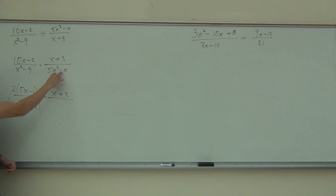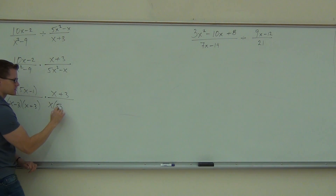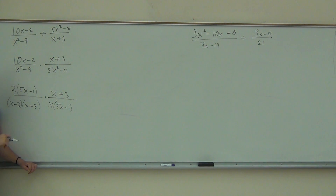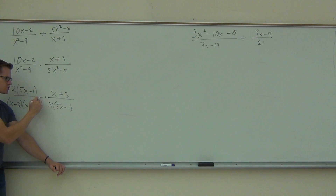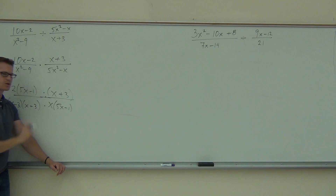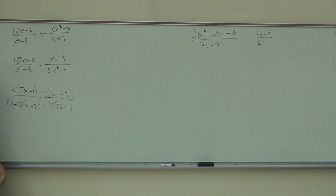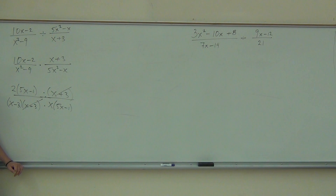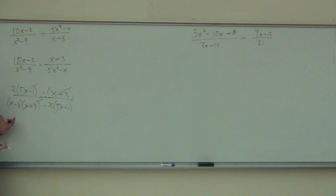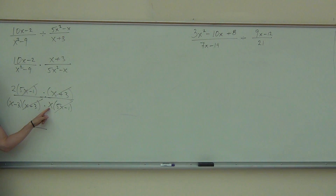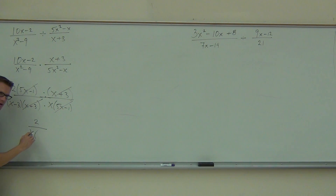The next thing we factor out is just an x, and we're going to get 5x minus 1. Before you start simplifying anything — crossing stuff out — even though I know we want to do it right here, just extend this line, put the dot and a dot. We need some parentheses around that thing. Now we're going to start simplifying. What I see up here is an x plus 3 and an x plus 3. I also see a 5x minus 1 and a 5x minus 1. I don't want to forget the things I haven't crossed out, such as the 2 and that x particularly — a lot of people forget that x. The x we're going to write first, and then we'll have x minus 3.